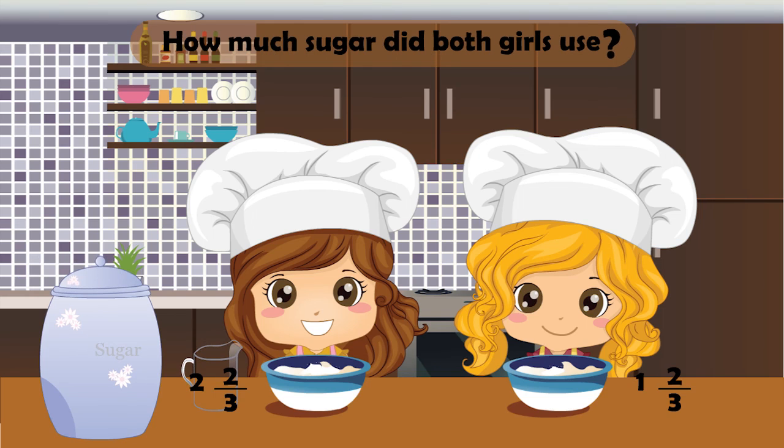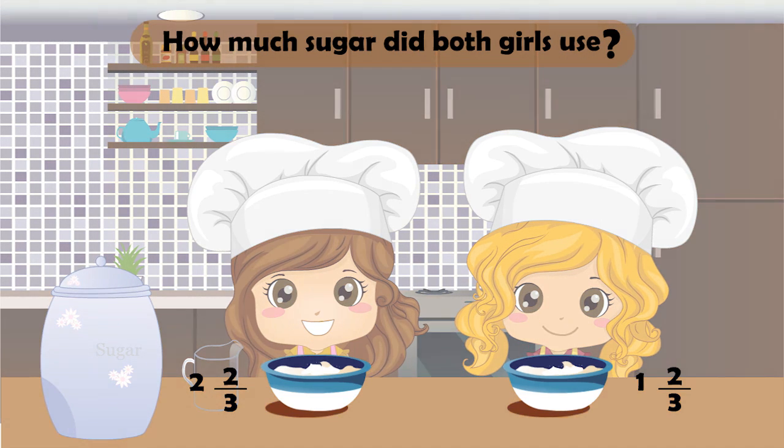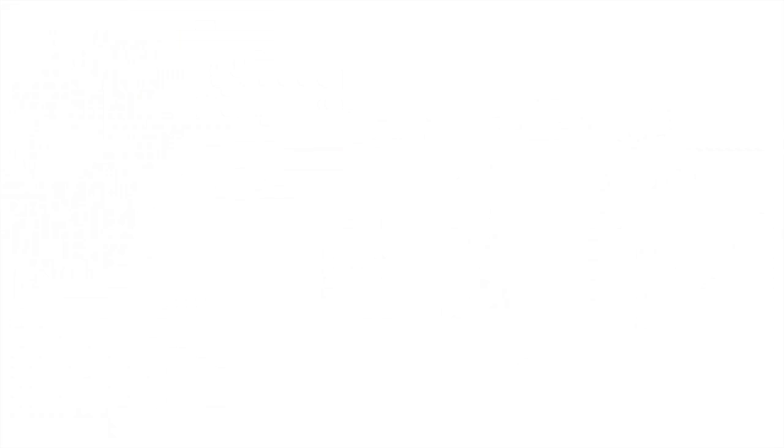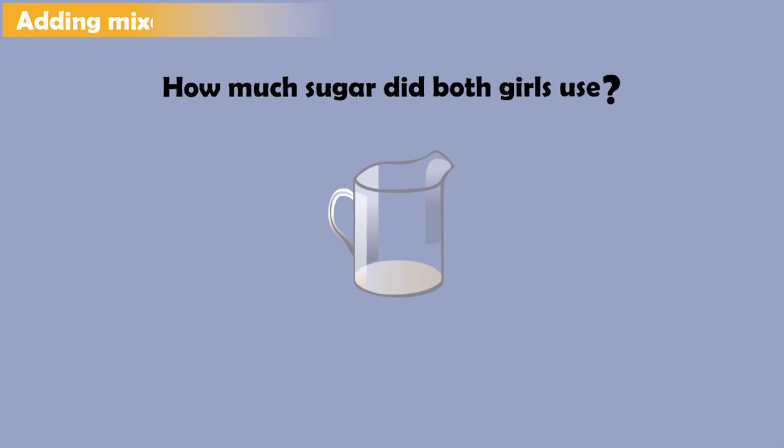To find out, we need to add together the amount of sugar each of them used. Each cup of sugar is divided into 3 equal parts.